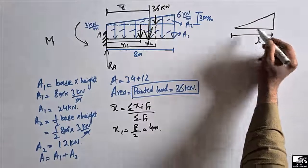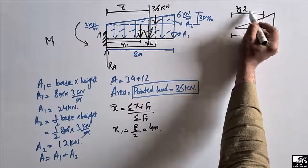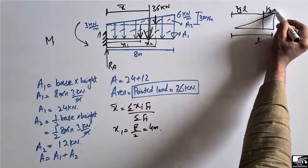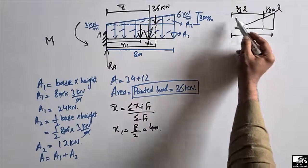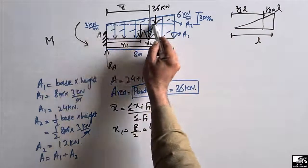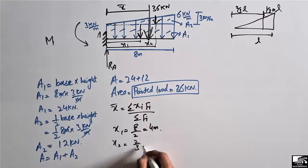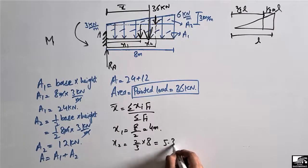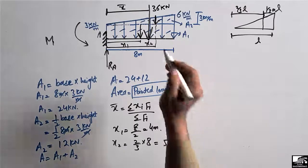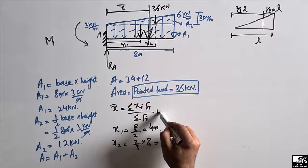For a triangle, the centroid is at two-thirds of the length L from the left end. Since L is 8 meters, x2 equals two-thirds times 8, which gives us 5.33 meters. So we have found the centroid distance for both the rectangle and the triangle.